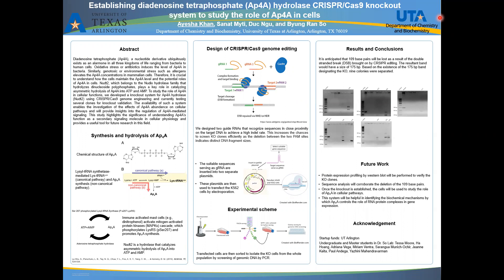Diadenosine tetraphosphate, also called AP4A, is a small molecule derived from nucleotides. It is composed of two adenosines joined by four phosphates. AP4A is found in all living organisms, including prokaryotes and eukaryotes.